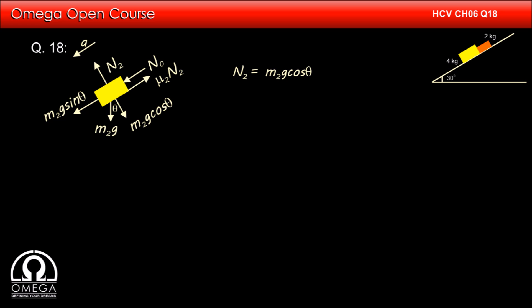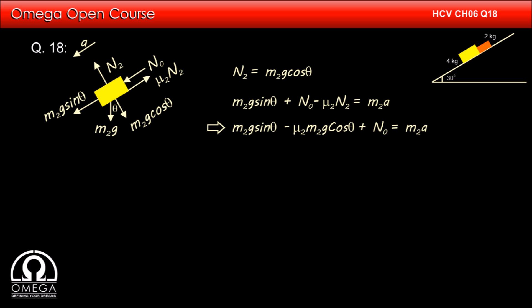As per Newton's second law, the net force down the incline equals mass times acceleration. Therefore, M2g sin theta + N0 − mu2·N2 = M2·a. Substituting N2 = M2g cos theta, we get: M2g sin theta − mu2·M2g cos theta + N0 = M2·a. This is equation 1.